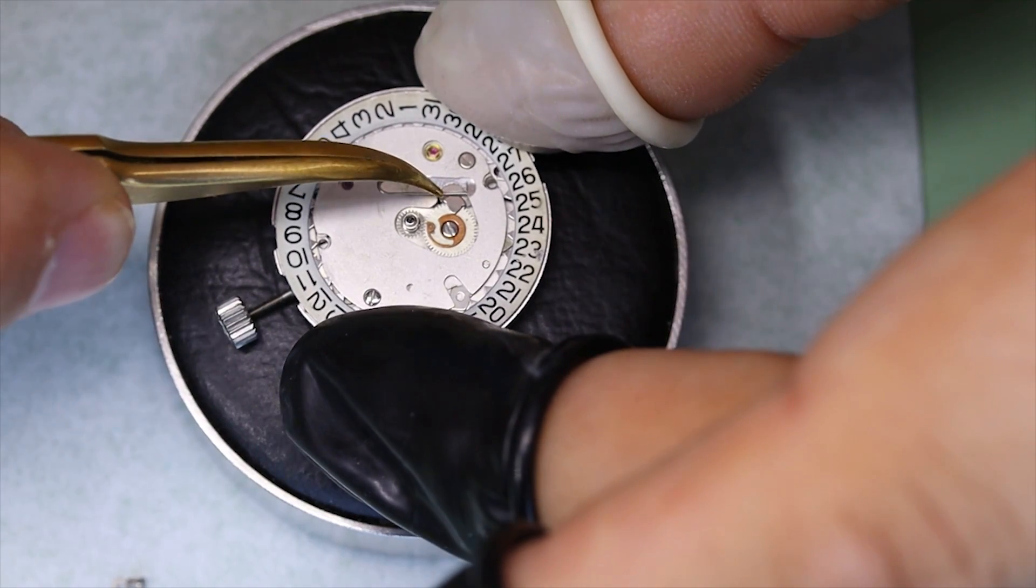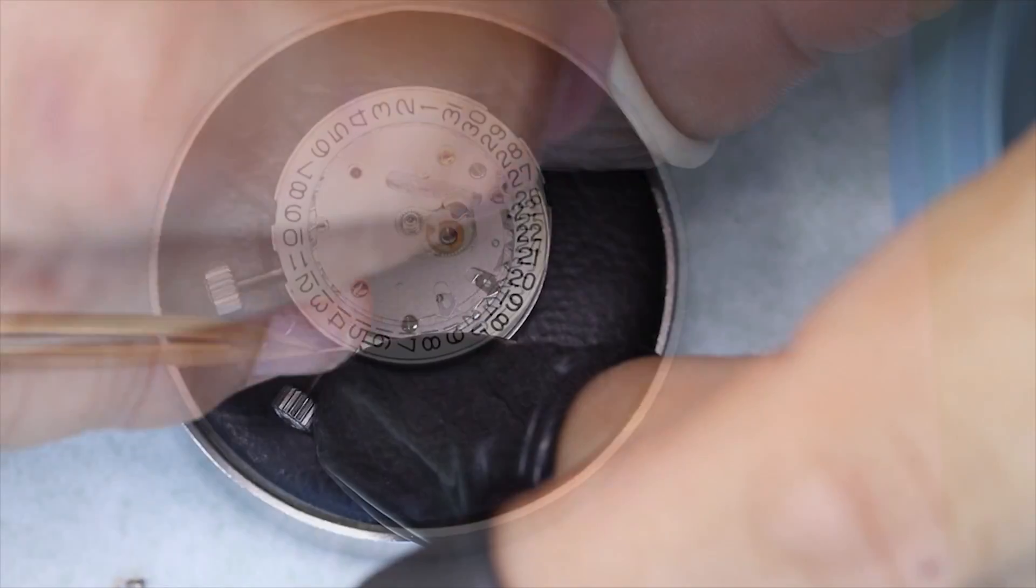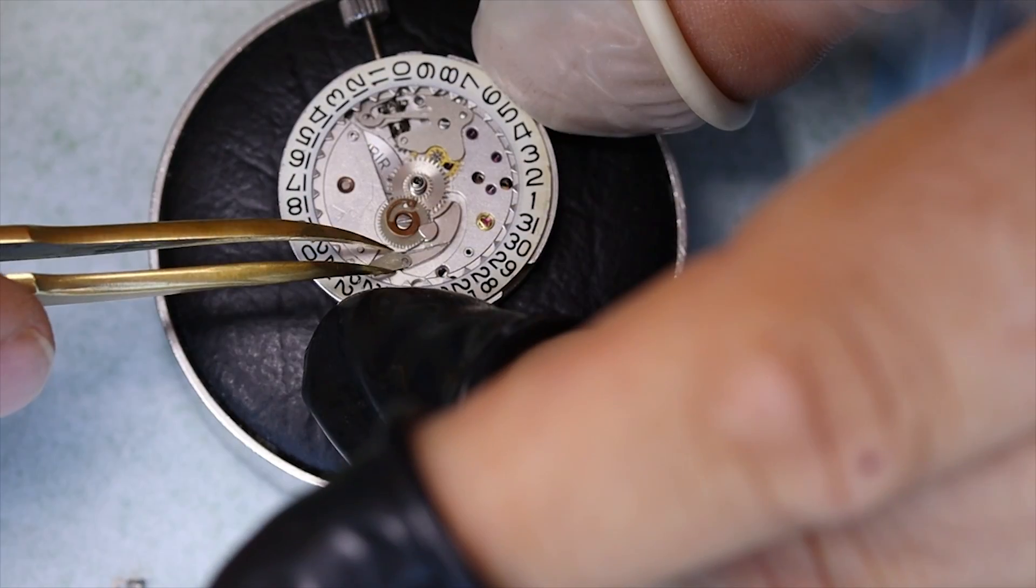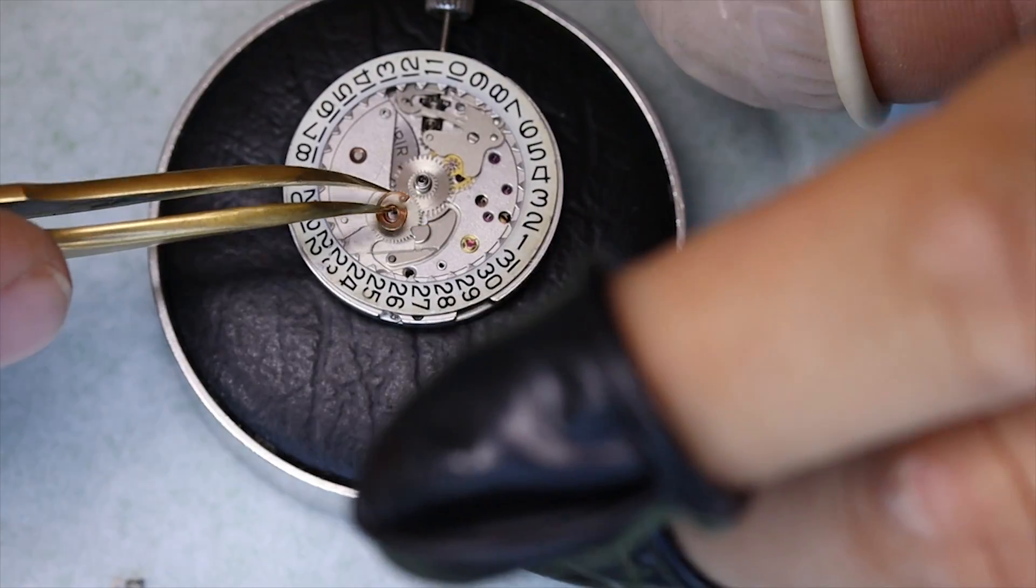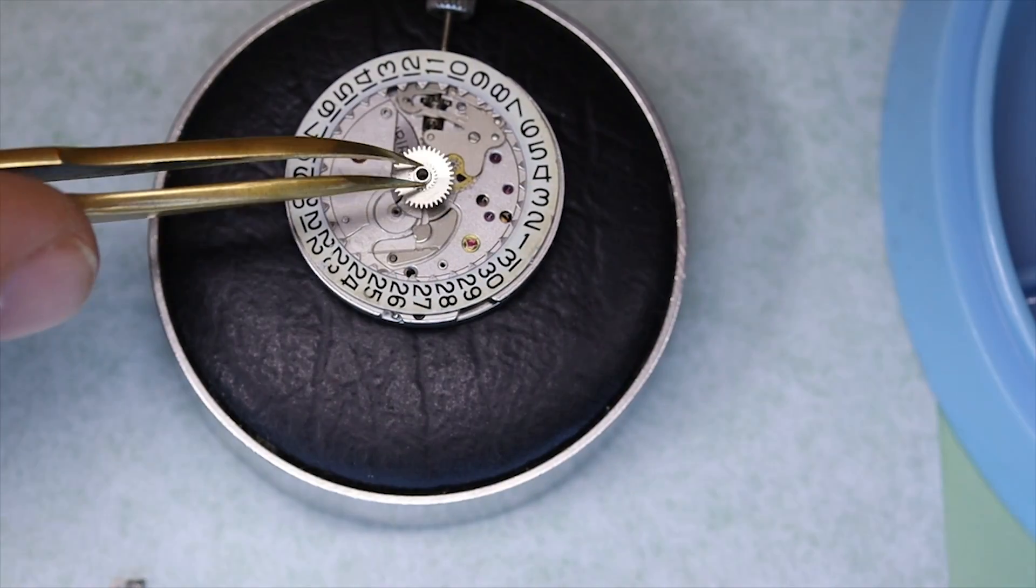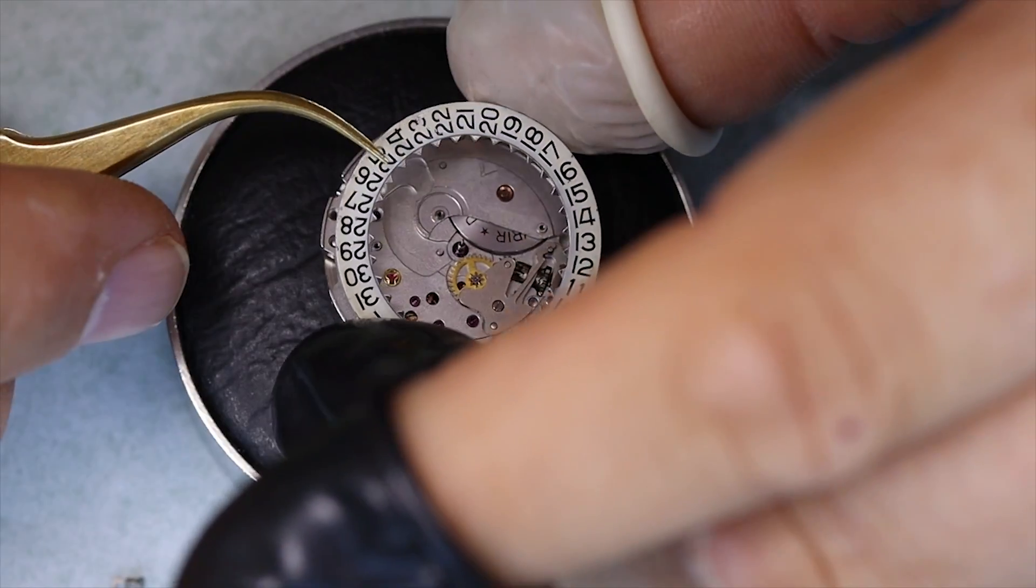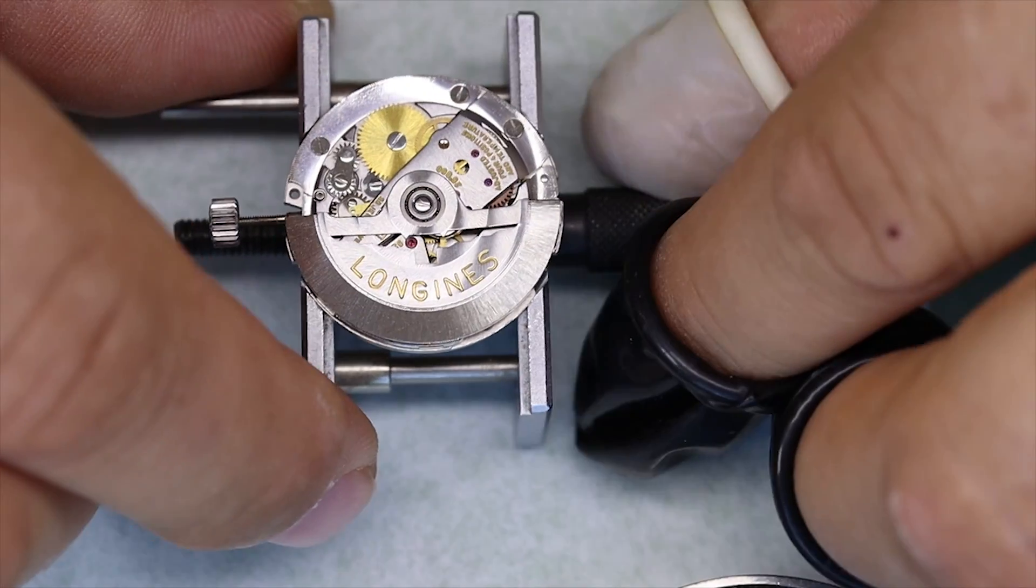With the hands and dial off we can take off the calendar works and do that before we start working on the other side so we can take off the cannon pinion also. And you might have noticed that the date is a very rapid changeover, we'll talk a little bit more about that when we assemble the watch again.